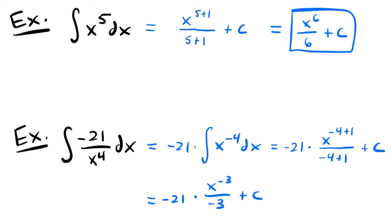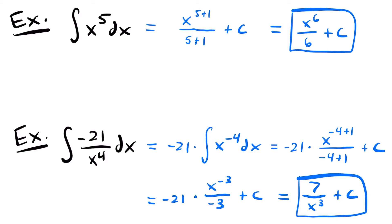If we want to simplify this one more time, notice that negative 21 divided by negative 3 will be positive 7. So we'll have 7, and then we'll move this term with a negative exponent to the denominator. So we'll have 7 divided by x cubed plus c. The integral of negative 21 divided by x to the fourth power is 7 divided by x cubed plus c.